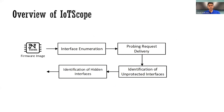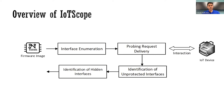Here is an overview of the tool IoTScope. The input is a firmware image. There are four modules in the tool: interface enumeration, probing request delivery, identification of unprotected interfaces, and identification of hidden interfaces. The tool interacts with a physical device or firmware in an emulator. The tool's output is the two types of hidden interfaces that we mentioned.